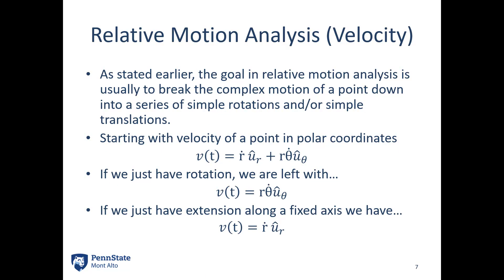The goal is to break the complex motion down into simple pieces. The general equation for velocity in the polar direction is R-dot times U_R plus R*theta-dot times U_theta. If we have just rotation, that leaves us with R*theta-dot in the U_theta direction. If we just have extension along a fixed axis, we would have R-dot in the U_R direction. If we have both, we rely on the full equation: R-dot*U_R plus R*theta-dot*U_theta.